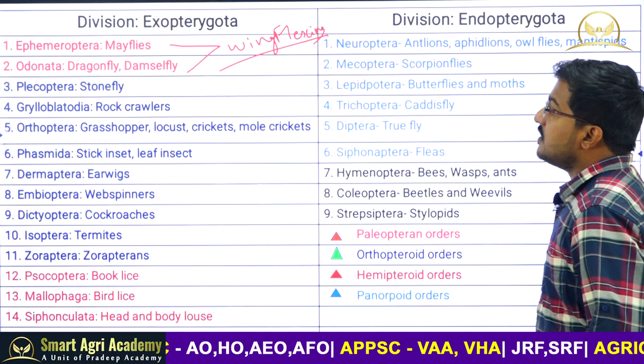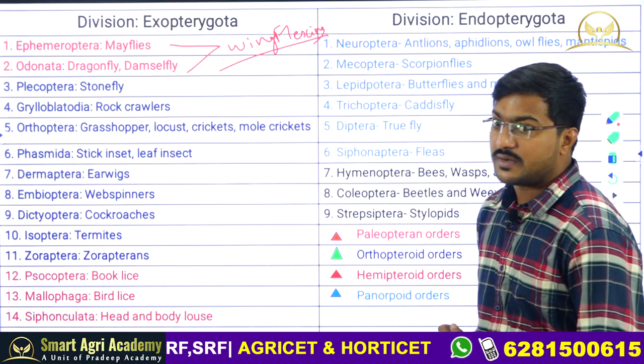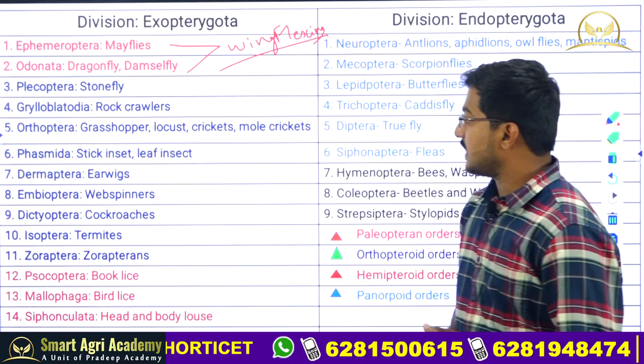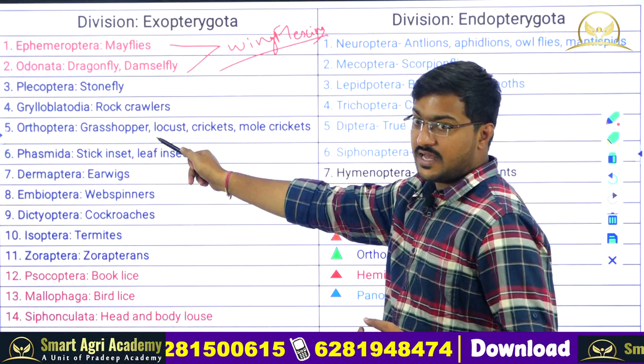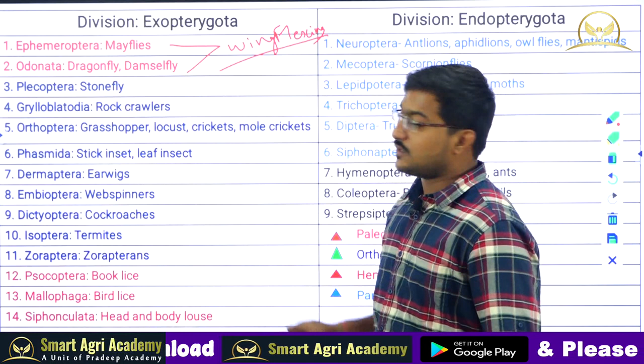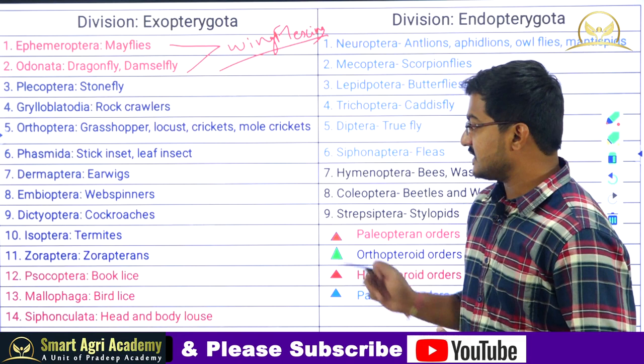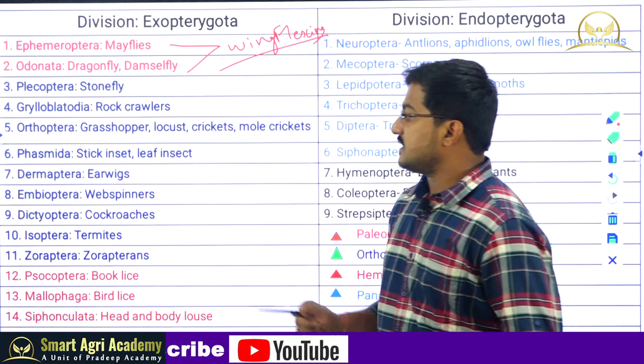The second group is the Orthopteroid orders, which includes Plecoptera to Zoroptera. Plecoptera examples are stoneflies; Grylloblattodea includes rock crawlers; Orthoptera includes grasshoppers, locusts, crickets, and mole crickets. Orthoptera is divided into Caelifera and Ensifera — Caelifera includes acridids, and Ensifera includes tettigoniids (longhorn grasshoppers). Phasmida includes two families: Phyllidae (leaf insects) and Phasmatidae (stick insects). Dermoptera includes earwigs; Embioptera includes web spinners; Dictyoptera includes cockroaches and mantids; Isoptera includes termites; and Zoroptera includes zorapteterns.